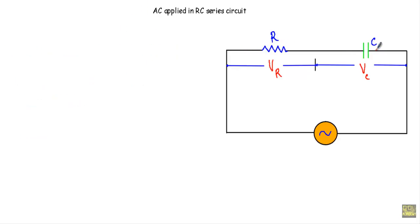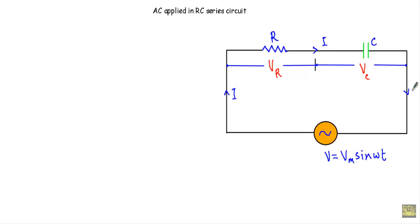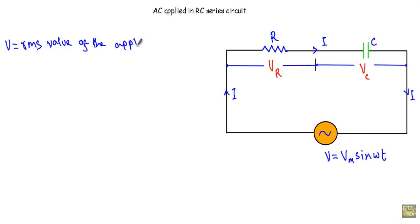We have a resistor R which is in series with a capacitor C. In the circuit we are applying an alternating voltage V, given by V equal to Vm sine omega t. As this is a total series circuit, let's say the current I is flowing through all over the circuit. Consider V as the RMS value of the applied voltage.